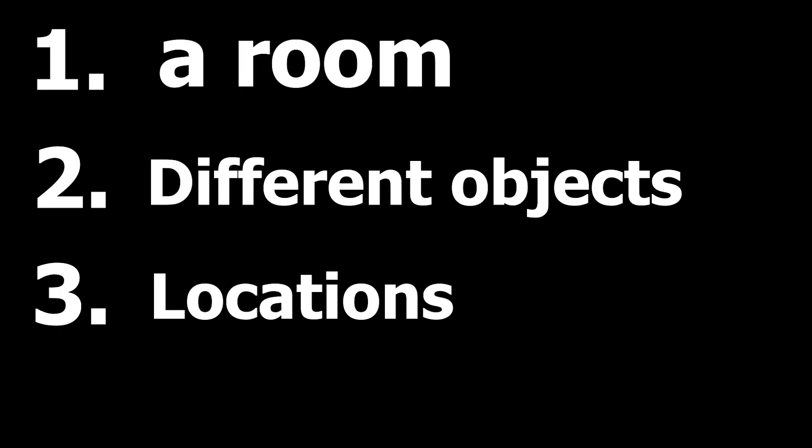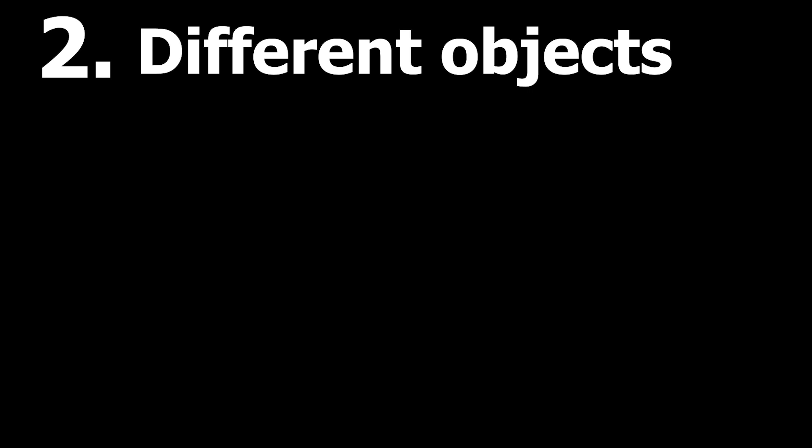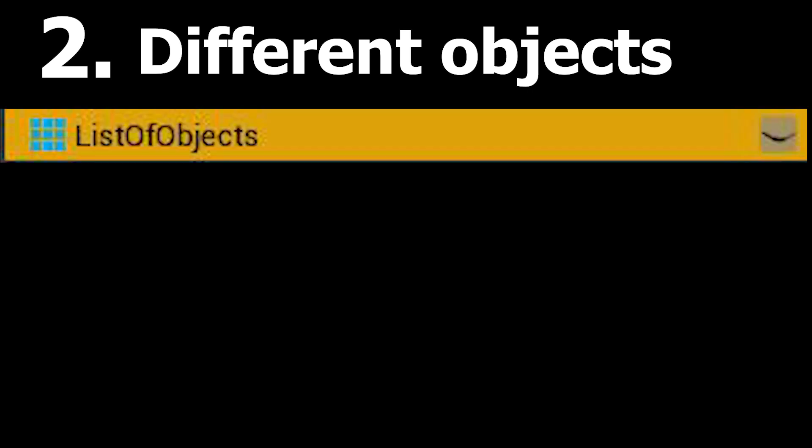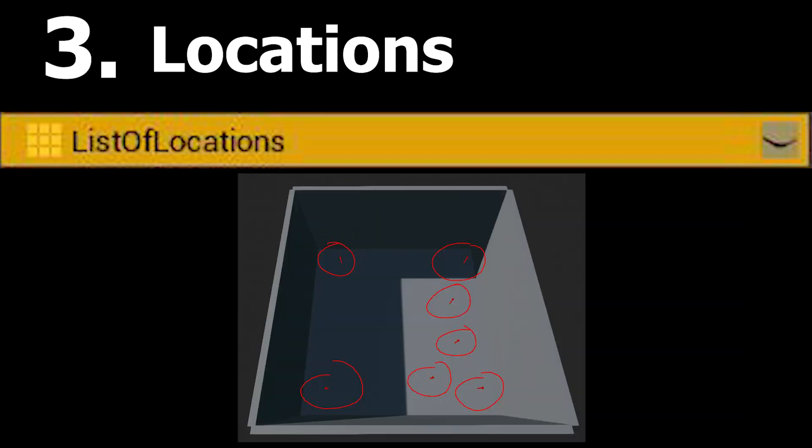Rule number two: get specific with each written task. Let's take 'we will need a room' — so for a room we will simply need a blueprint actor with four walls and a floor. Then we wrote 'we will need a list of objects to fill the room with' — when we hear a list of anything we should immediately think of arrays, because an array can store multiples of anything. And lastly, we need multiple locations, so we can use another array of vectors to store those locations.